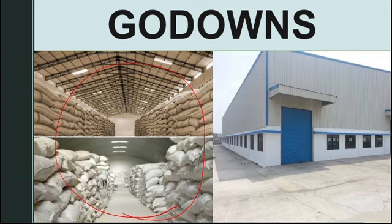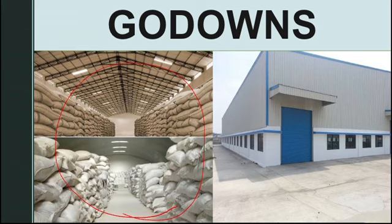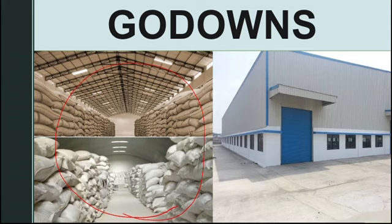For example, we get Maggi packets from a store near our house. That store gets it from the local market, the local market gets it from the main market, and the main market stores it in godowns. So the process is: godown → main market → local market → store near your house. This is how food comes to us.